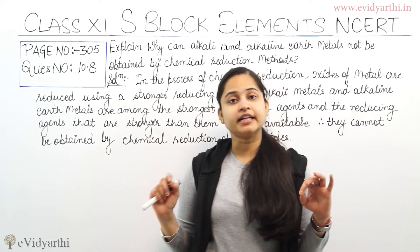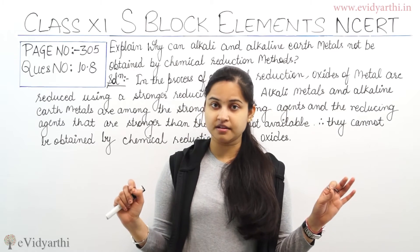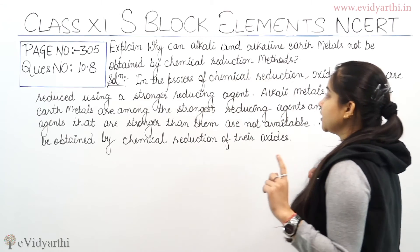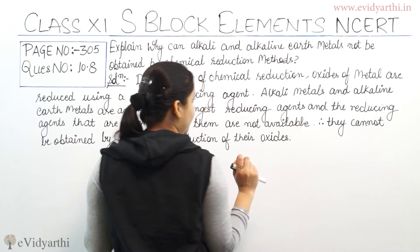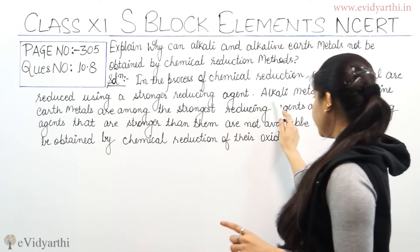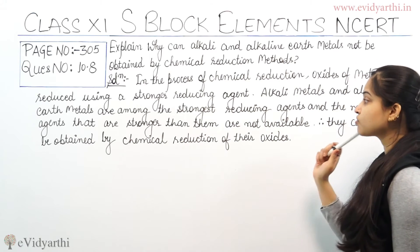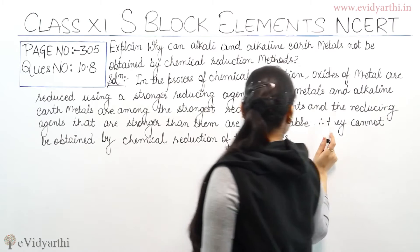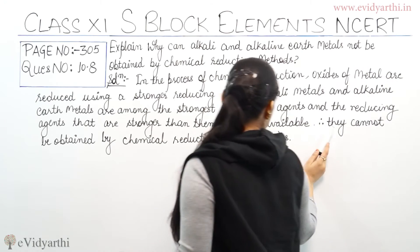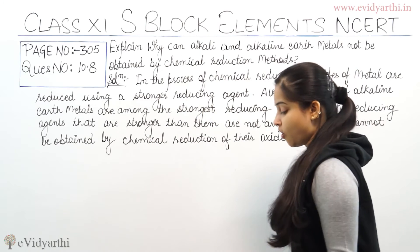This is the reason why alkali and alkaline earth metals cannot be obtained by chemical reduction process. In the process of chemical reduction, oxides of metal are reduced using a stronger reducing agent. Alkali metals and alkaline earth metals are among the strongest reducing agents, and reducing agents stronger than them are not available. Therefore, they cannot be obtained by chemical reduction of their oxides.